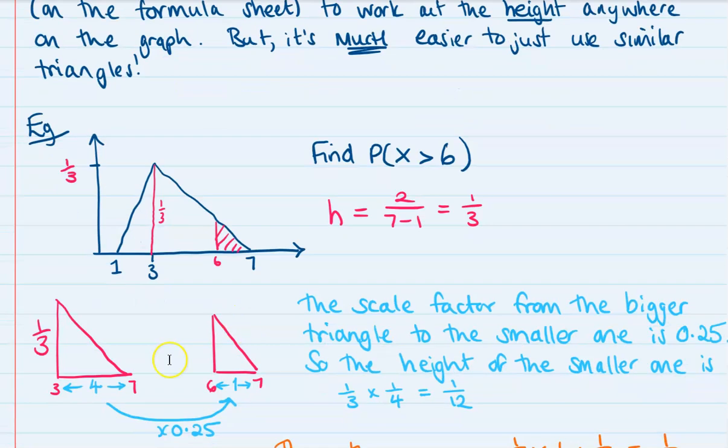Using what we know about similar triangles, the big triangle here from the peak up to the end, from 3 to 7, has a base of 4 and a height of one-third. We want to shrink that down to the little triangle here from 6 to 7 that has a base of 1. So that scale factor will be a reduction, a multiplication of 0.25. We can do the same thing to the height, so the height of the little triangle will be one-third times that scale factor of 0.25 to make it one-twelfth.